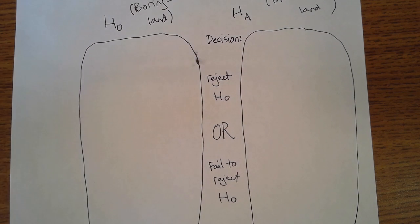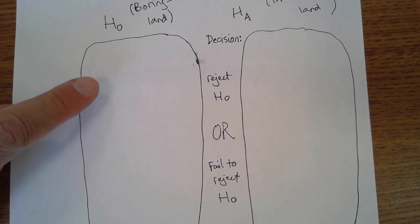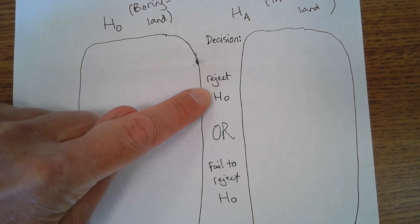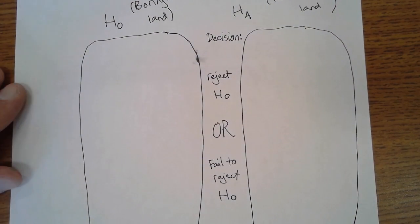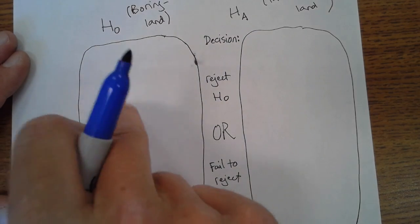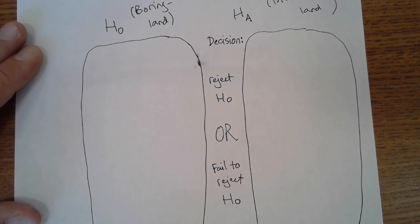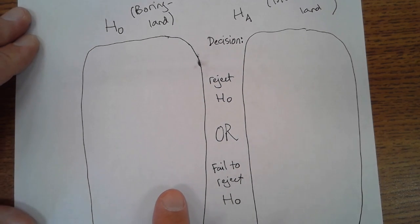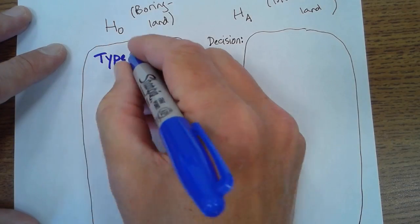But we could look at four different possible outcomes. What if we live in boring land? So there's really nothing interesting here, there's nothing interesting to be discovered, but we reject the null hypothesis and conclude that, for example, in this case, the new paint formula works better than the old. It really doesn't. It really doesn't if we live in boring land, so that would be an incorrect conclusion. It's correct based on our data, but it happens to be leading us to conclude something that's not true.